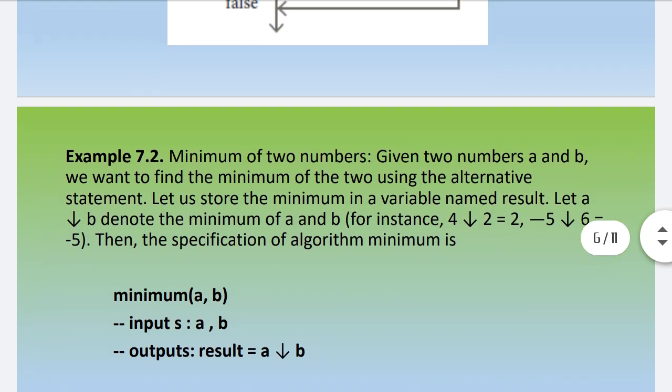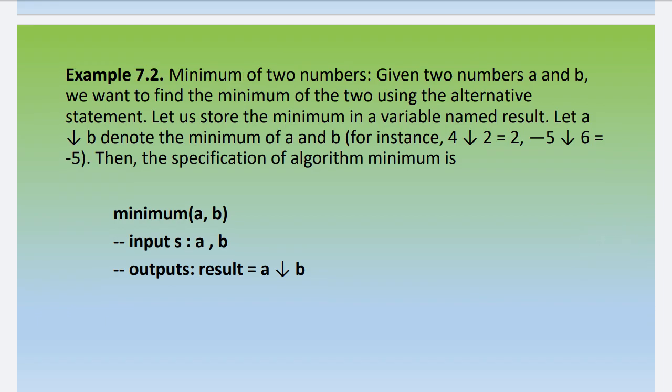Next, we are going to see one example: finding the minimum of two numbers. Given two numbers, a equals 4 and b equals 2, which is the minimum value? 2 is the minimum value, so the result is equal to 2. In another example with minus 5 and 6, the minimum value is minus 5.